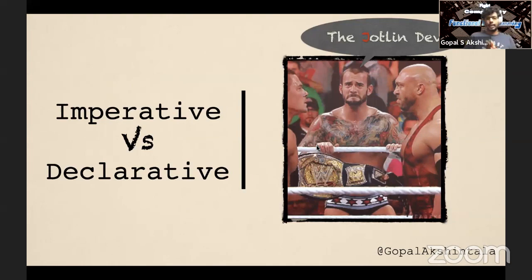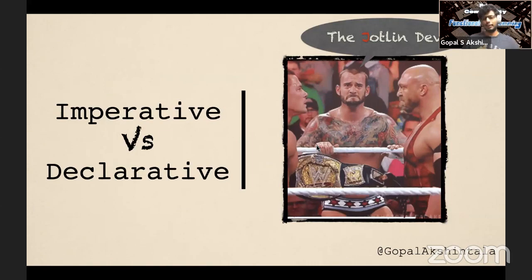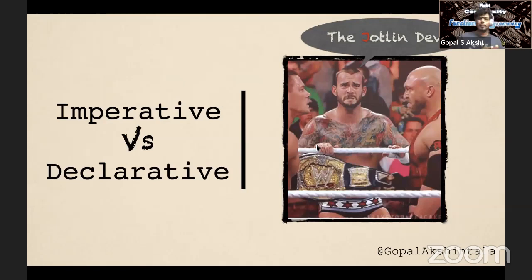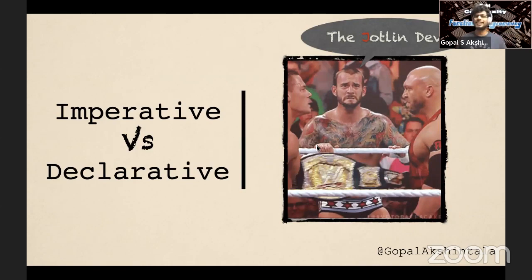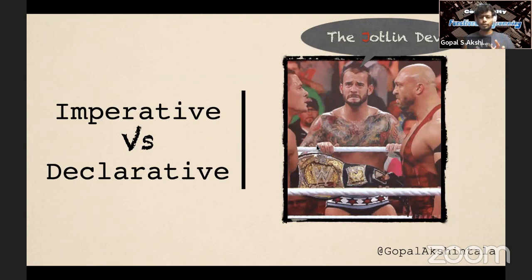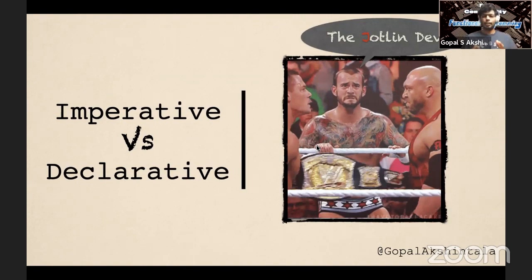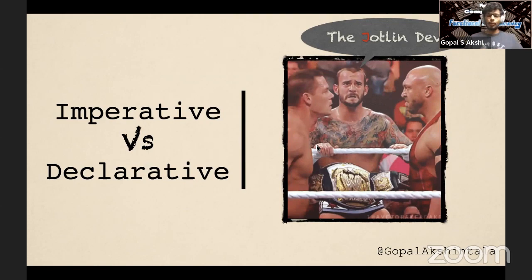Let's jump into the next war: the style war — imperative versus declarative. The guy in the middle is a Jotlin developer. Who is a Jotlin developer? A developer who has come from a Java background and entered Kotlin pretty recently. I call him a Jotlin developer because he's used to the imperative style of Java, and suddenly gets into Kotlin with a lot of functional toolset, and is confused what to use. Let's help that guy and see what kind of style suits what problem.